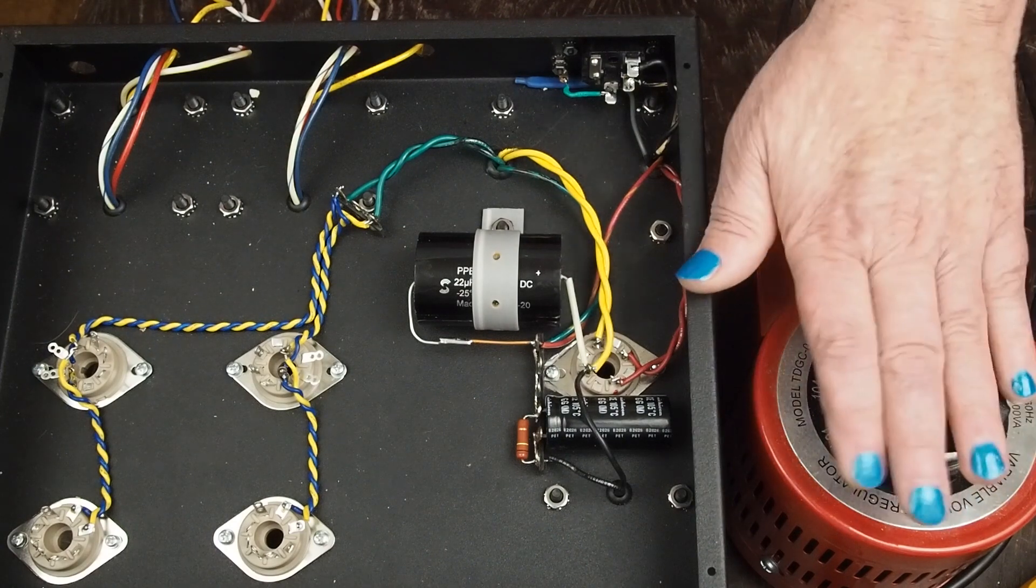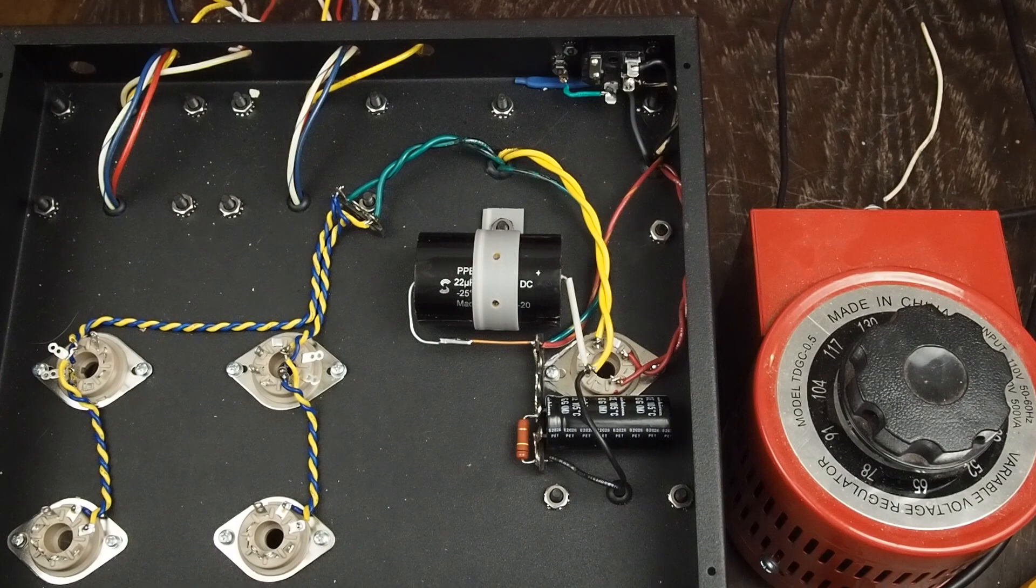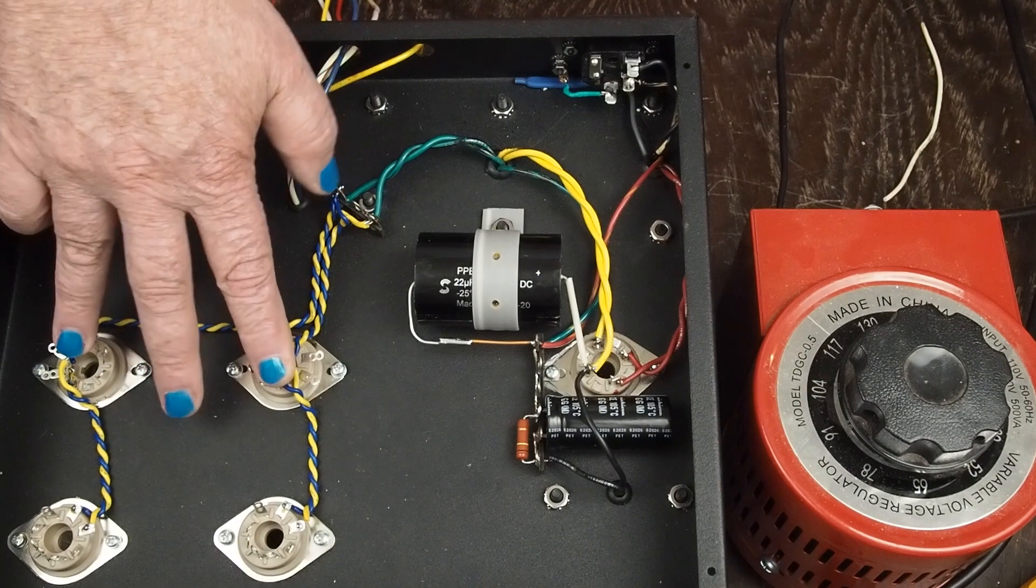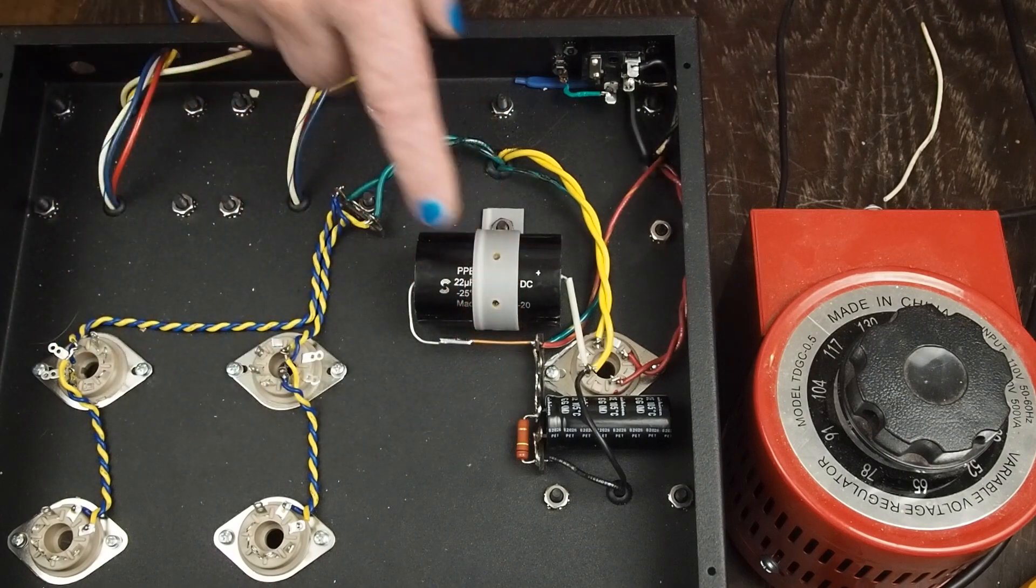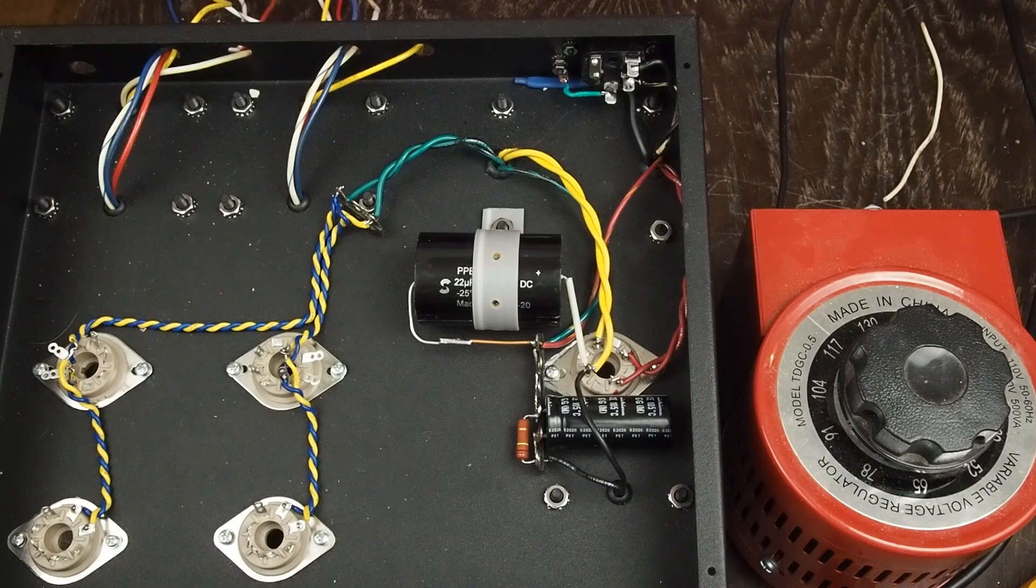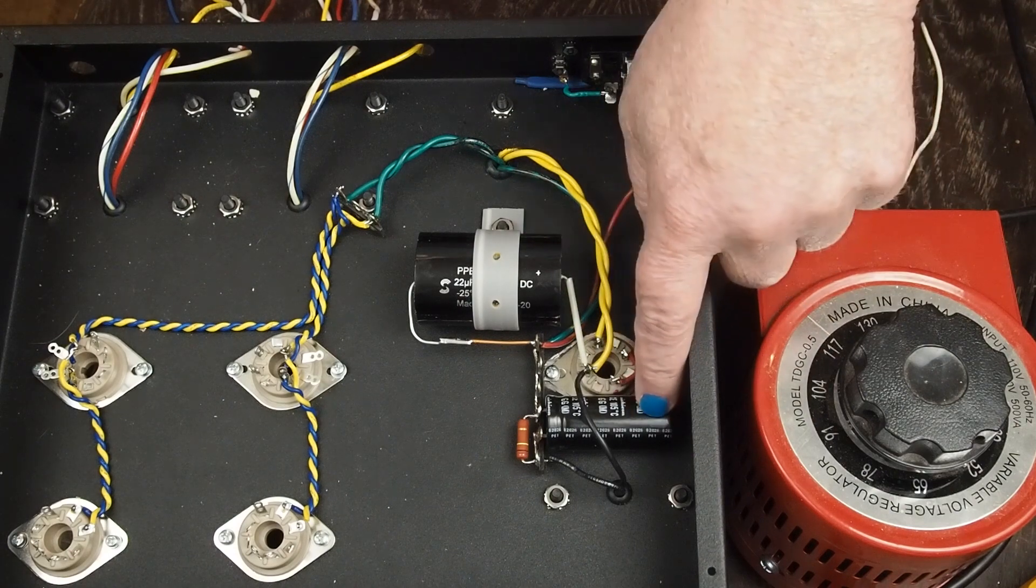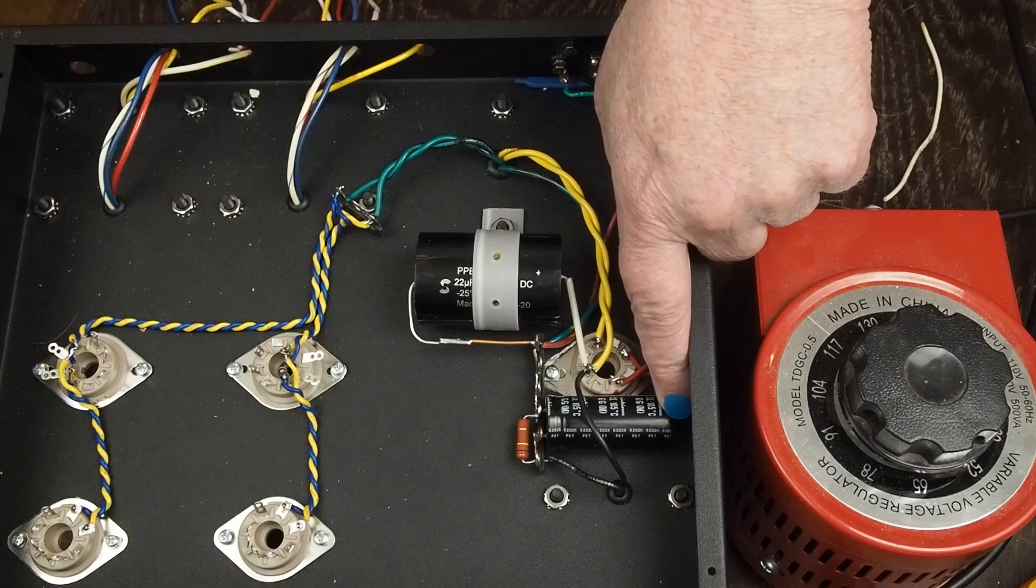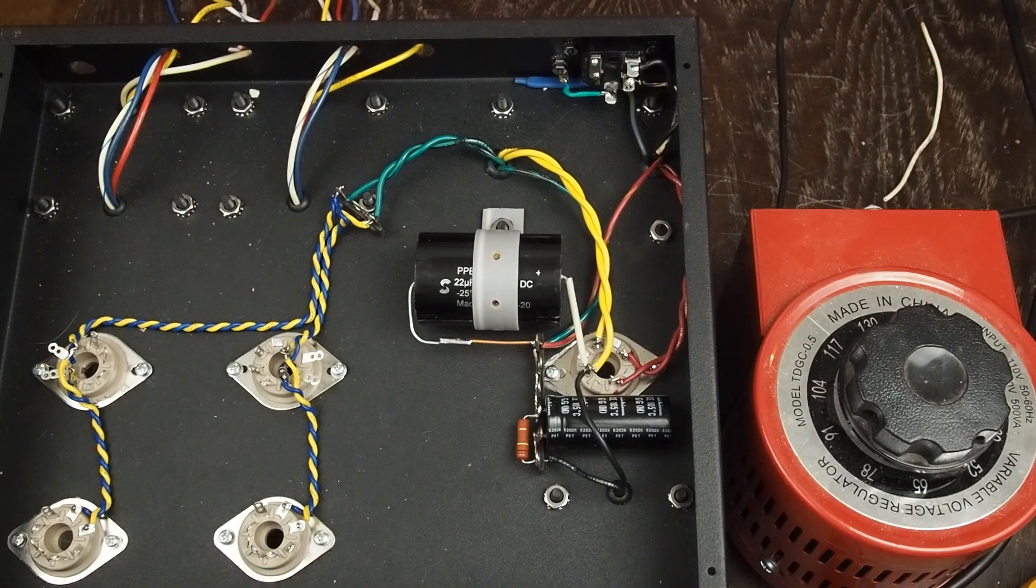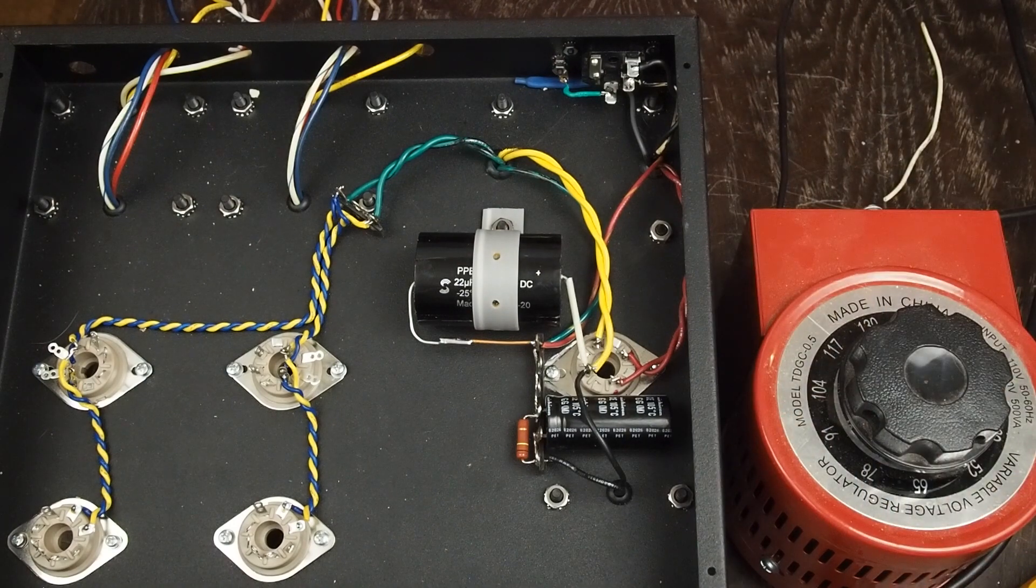I highly recommend that you get a variac if you're going to be working with tube stuff, because unloaded, without the output tubes being in the circuit, the B+ is going to go higher than this capacitor is rated for. So if you just plug this thing into a wall with the rectifier tube in and no other tubes, it'll probably explode this capacitor. If you don't have a variac, this needs to be a minimum of a 500 volt capacitor, and even then I'm not sure that's high enough.